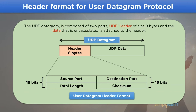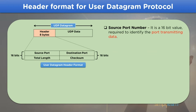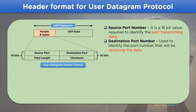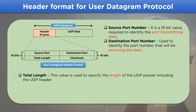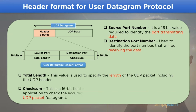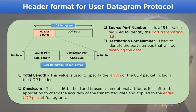Let's look at the different parts of the header format in a little detail. The first is source port number: it is a 16-bit value used to identify the port that is transmitting the data. Next is destination port number, used to identify the port number that will be receiving the data. Next we have total length, which specifies the total length of the UDP packet including the UDP header. Lastly, checksum is a 16-bit value field used as an optional attribute — left empty if not needed, or used when accuracy of the data is to be measured.